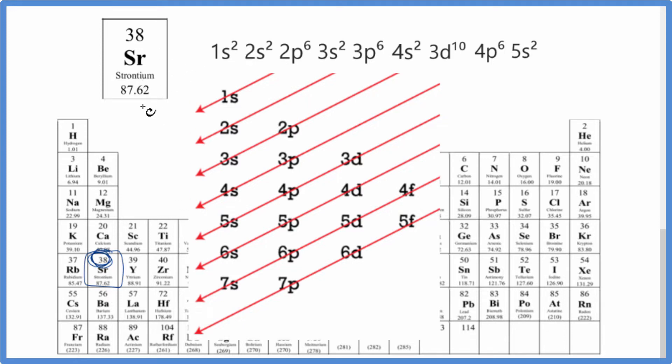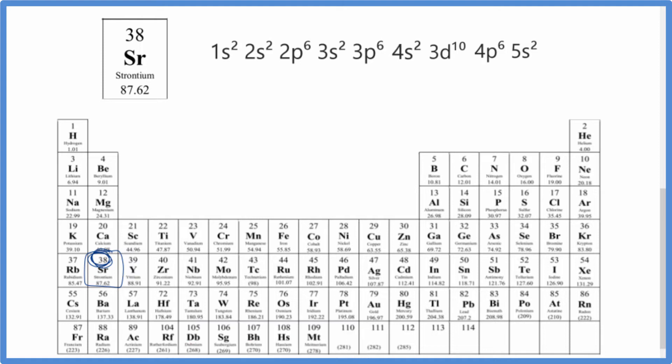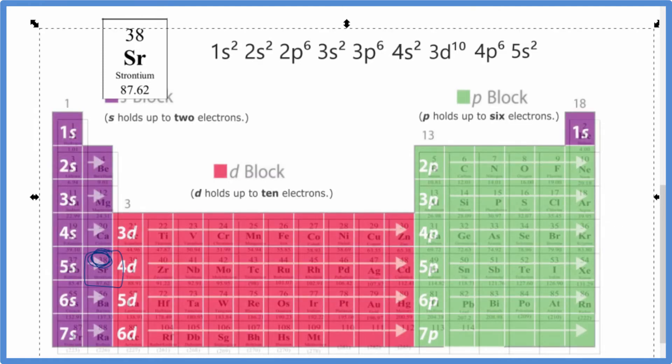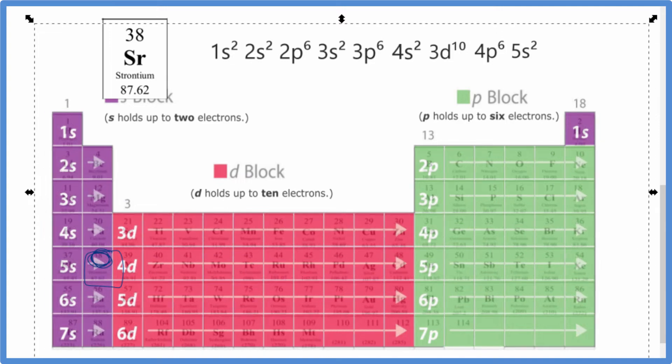There's one more way we can do this. I think this is a much better way to do it. It really shows you the layout of the periodic table. So here we have the periodic table, and it's set up in what we call orbital blocks. So to write the configuration, it's very similar to the chart you just saw. We start out, we're going to follow the atomic numbers across.